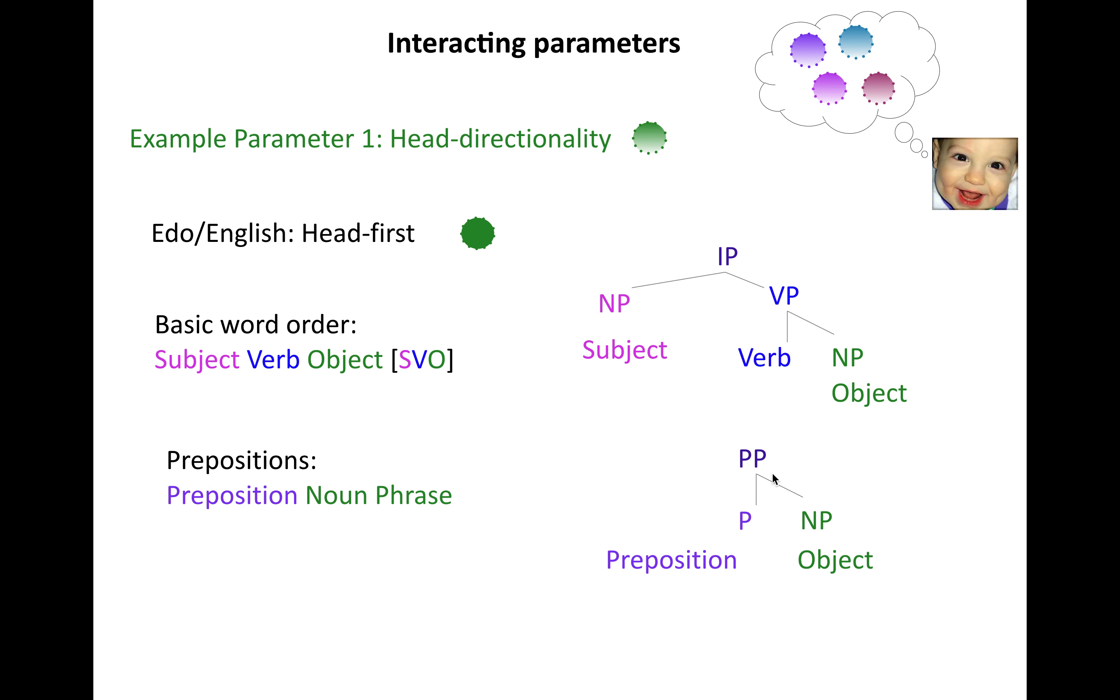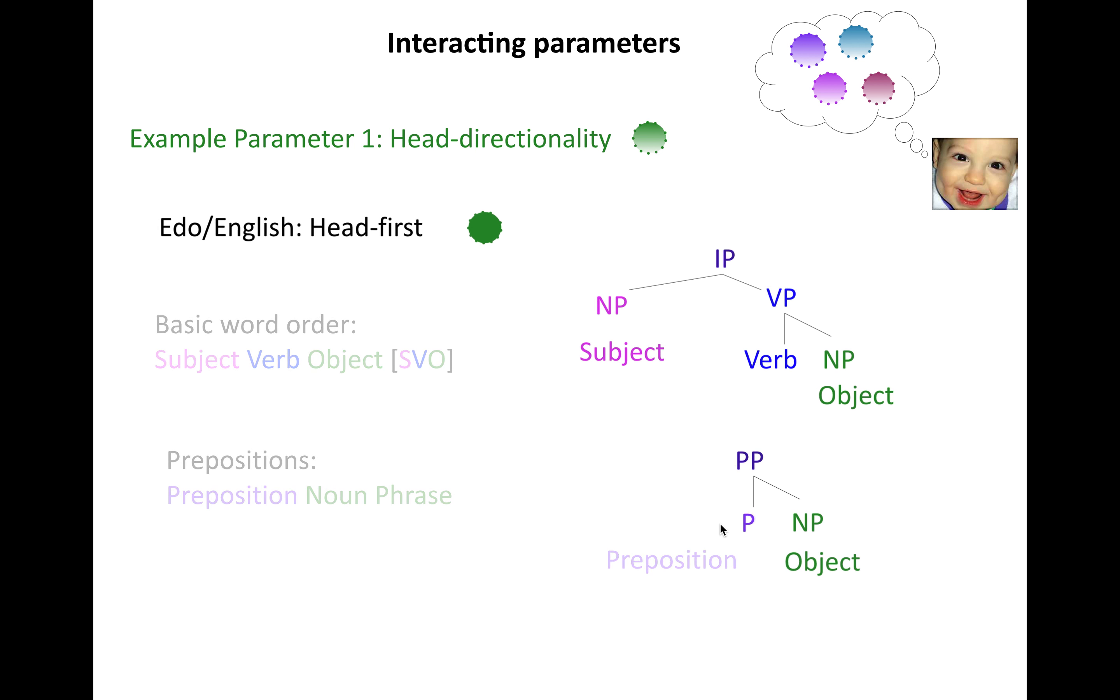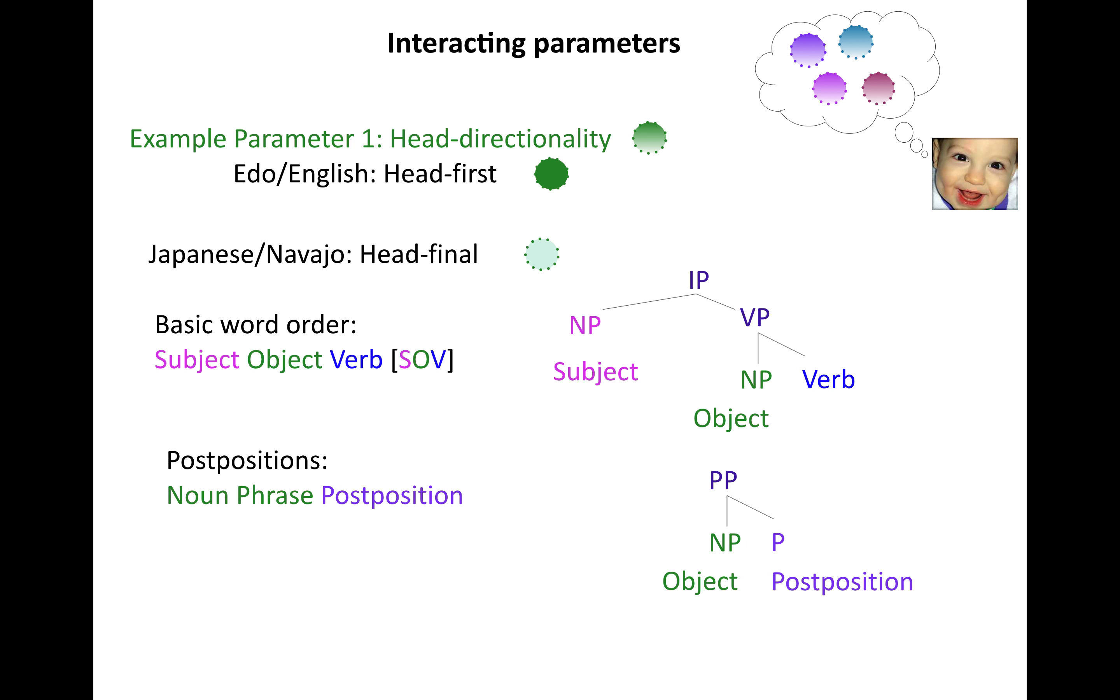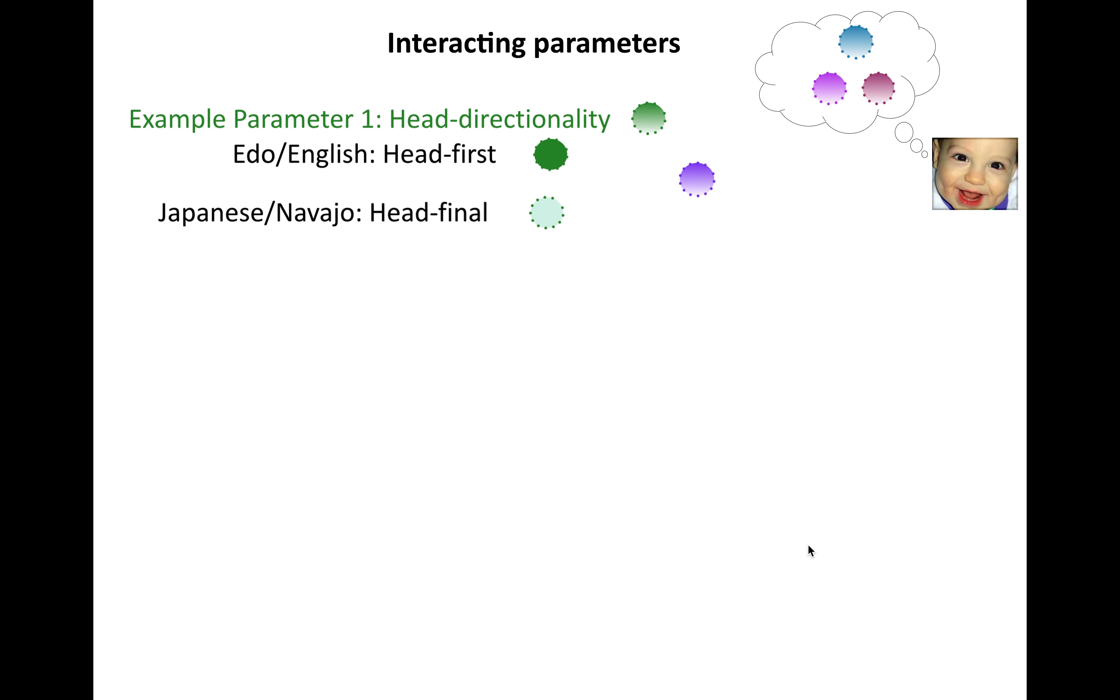And in, say, a preposition phrase, it is a preposition that comes before the object. And so that is one value. The opposite value, the competing value, would be for languages like Japanese and Navajo. And so head final would mean that in these phrases, you'll see, for example, that the verb is final in the verb phrase. So that object, verb, word order. And you have post positions, because you have that main head of the phrase at the final position within that phrase. So here are your two values. Great.